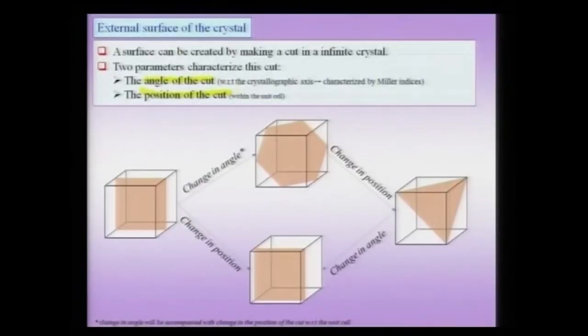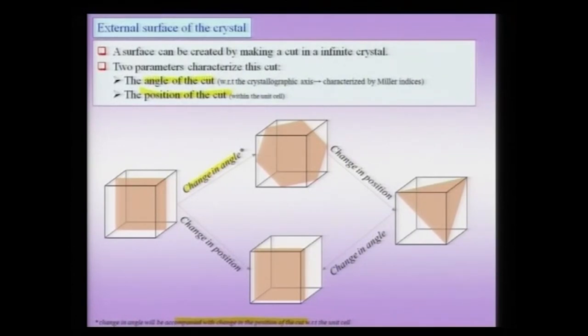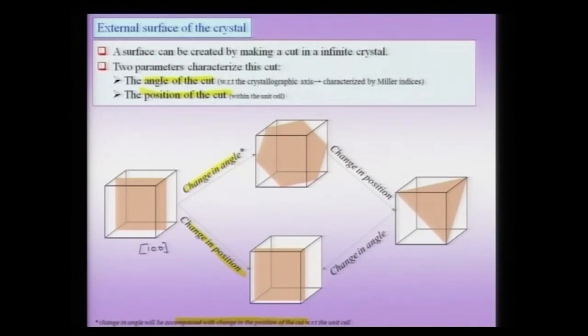Whenever I am making a cut of a crystal to create a surface, I need to characterize the cut by the angle with respect to the crystallographic axis and the position of the cut. Suppose I have a crystal and make a cut as shown; I can change the angle of the cut and the position of the cut with respect to the unit cell. As you can see, the area of the plane changes and the kind of bonds broken also changes. Alternatively, I can move the plane within the unit cell and change just the position of the cut — for instance, the same 100 plane but positioned differently within the cell.